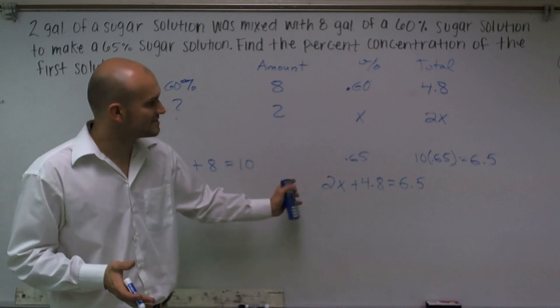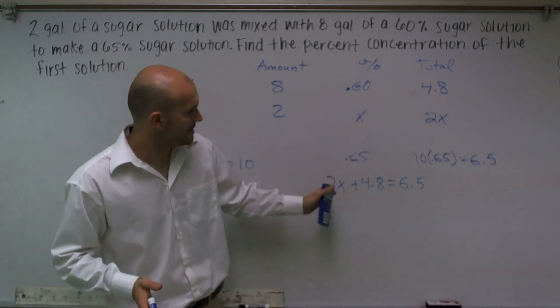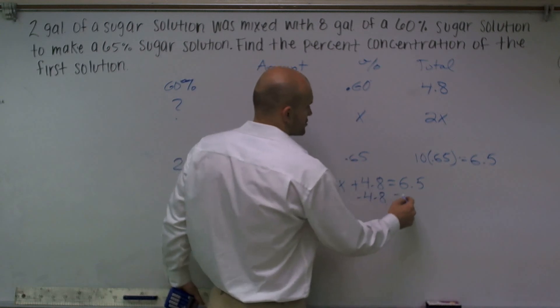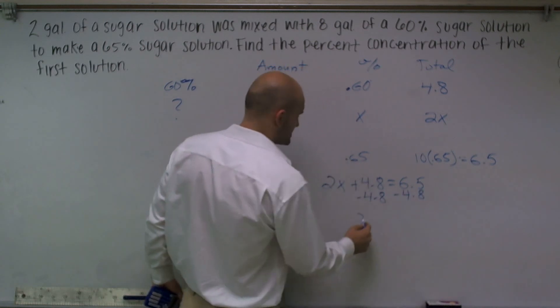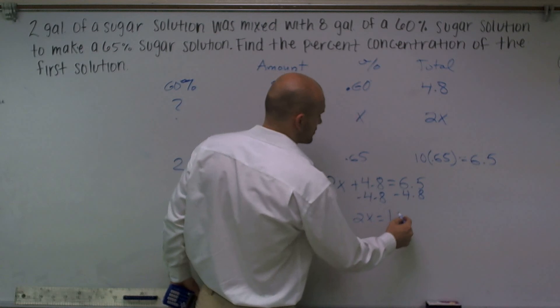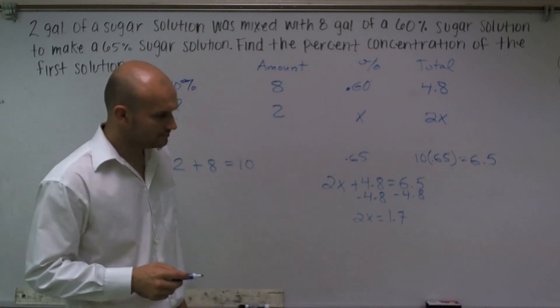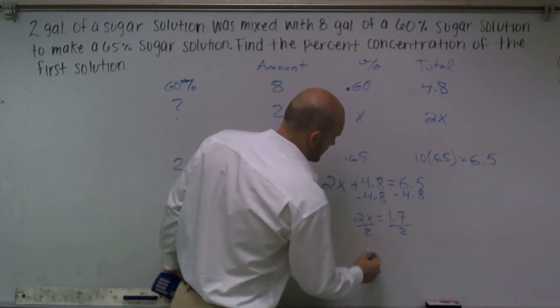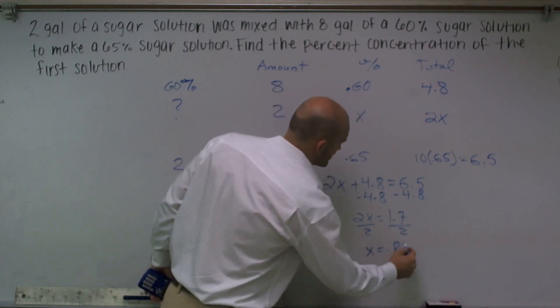So now we've set up an equation with our totals that now I can simply just solve using my algebraic properties. Subtract 4.8 on both sides, I get 2X equals 1.7 divided by 2. I get X equals .85.